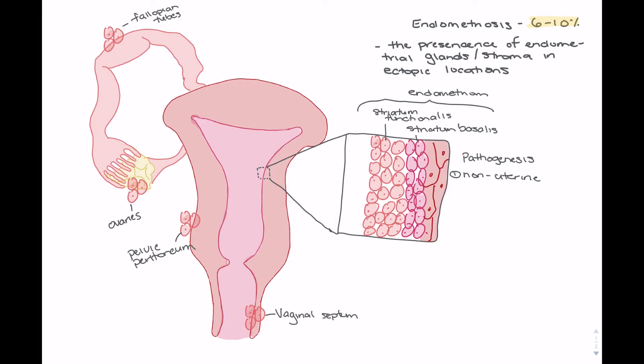There's two core theories surrounding how endometriosis actually occurs. One is the non-uterine theory. In this theory, it suggests that non-uterine tissue actually transforms into endometrial tissue through external stimuli. So tissue of the rectovaginal septum or the pelvic peritoneum is going to transform into endometrial tissue. Or alternatively, tissues that have traveled from somewhere else are going to enter the pelvic peritoneum or the vaginal septum, and they're going to turn into endometrial tissue.